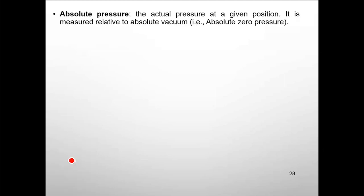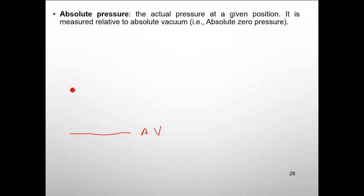There are certain definitions associated when dealing with pressures in gases and liquids. The first is absolute pressure — the actual pressure at a given location, measured with respect to absolute vacuum. If we define absolute vacuum as our reference level, we then have a second level defined as atmospheric pressure.